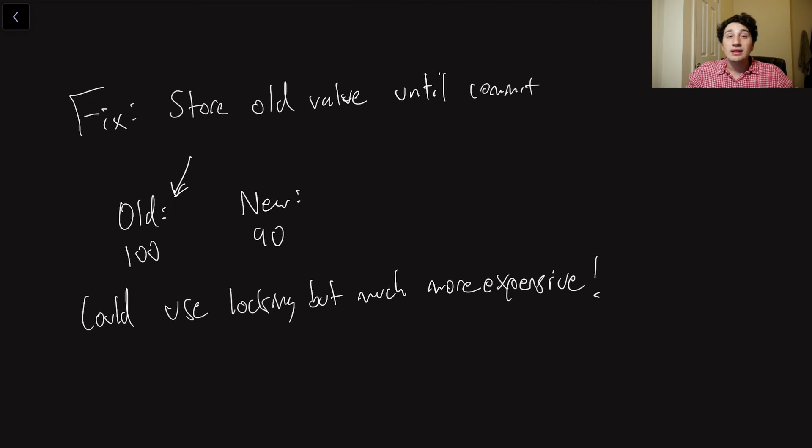Reads are much faster than writes, and as a result, one slow write can slow down a ton of reads. And so it would be much better if we could just avoid using locks in general.